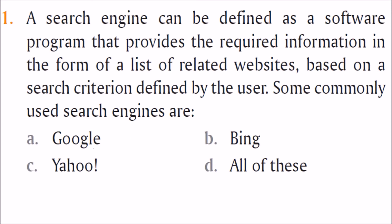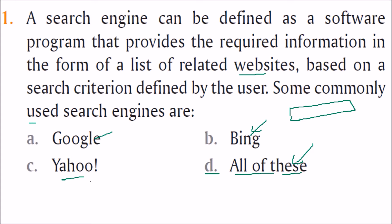The first question asks about search engines. Observe the options very carefully — sometimes all options are very similar. The search engine can be defined as a software program that provides the required information in the form of a list of related websites based on a search criterion defined by the user. Commonly used search engines are Google, Bing, and Yahoo. Yahoo is indeed a search engine — if you go to yahoo.com you will see a search bar running algorithms to find the required websites or links. So the answer is D — all of these.